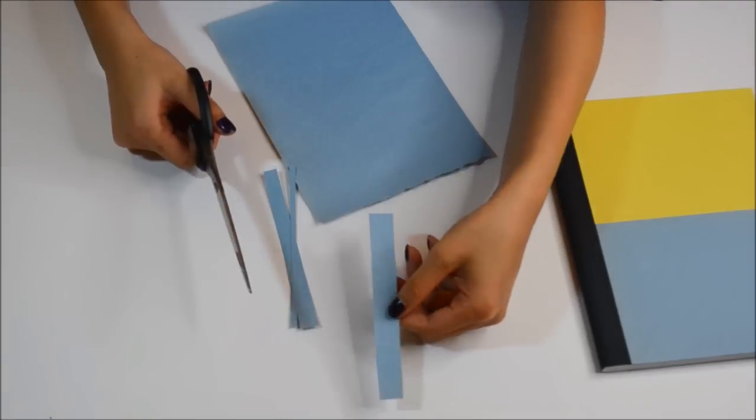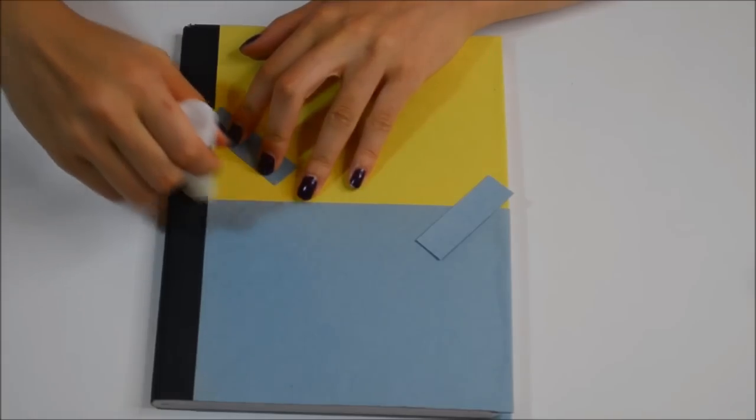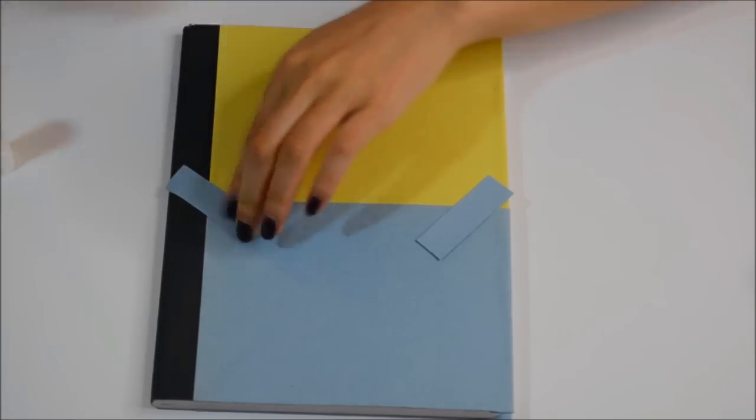Now that we have basically our foundation done, you're just going to cut out two little strips of blue and you're just going to glue it in between the yellow and the blue.